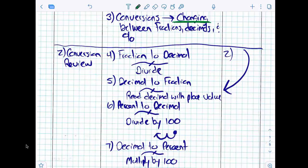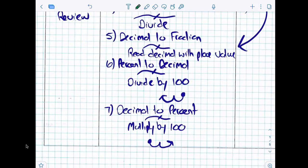How do you convert from a fraction to a decimal? Divide. How do you convert from a decimal to a fraction? Read it and write it. How do you convert from a percent to a decimal? Divide by 100. Which is the same as how many bunny hops to the left? Two.